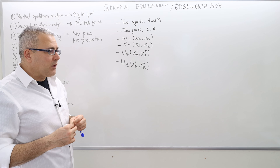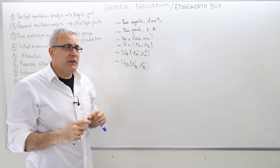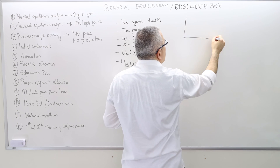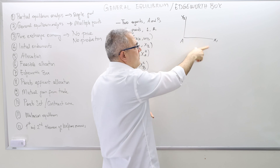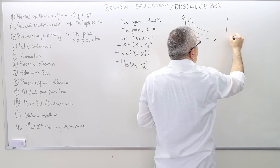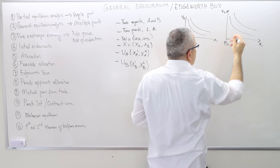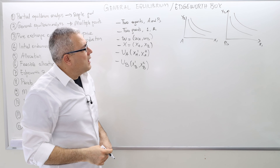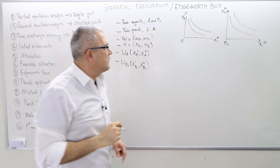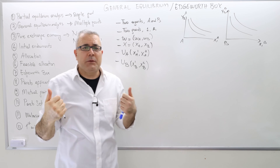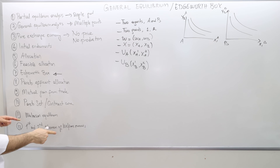What we would like to do in the Edgeworth box is draw the indifference curves of both agents on the same picture. In classic demand theory, we put agent A's consumption of good one and good two on the horizontal and vertical axes and draw indifference curves, and similarly for agent B. But drawing these separately is not helpful for the arguments we'll make later — like Pareto efficiency, Walrasian equilibrium, and so on.